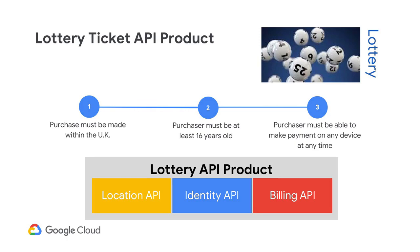The API product is formed as a collection of APIs that provides the user with the experience of purchasing a lottery ticket and ensuring that the minimum qualifications are met: purchase must be made within the UK, purchaser must be at least 16 years of age, and payment can be completed as part of that transaction. Furthermore, including reusable assets such as an enterprise security policy and a traffic management policy will ensure adherence to corporate requirements, enabling faster time to market. Because the lottery API product packages all of the necessary items, applications can be quickly created to allow purchasing of lottery tickets over a wide variety of experiences — online, mobile app, and kiosk purchases.